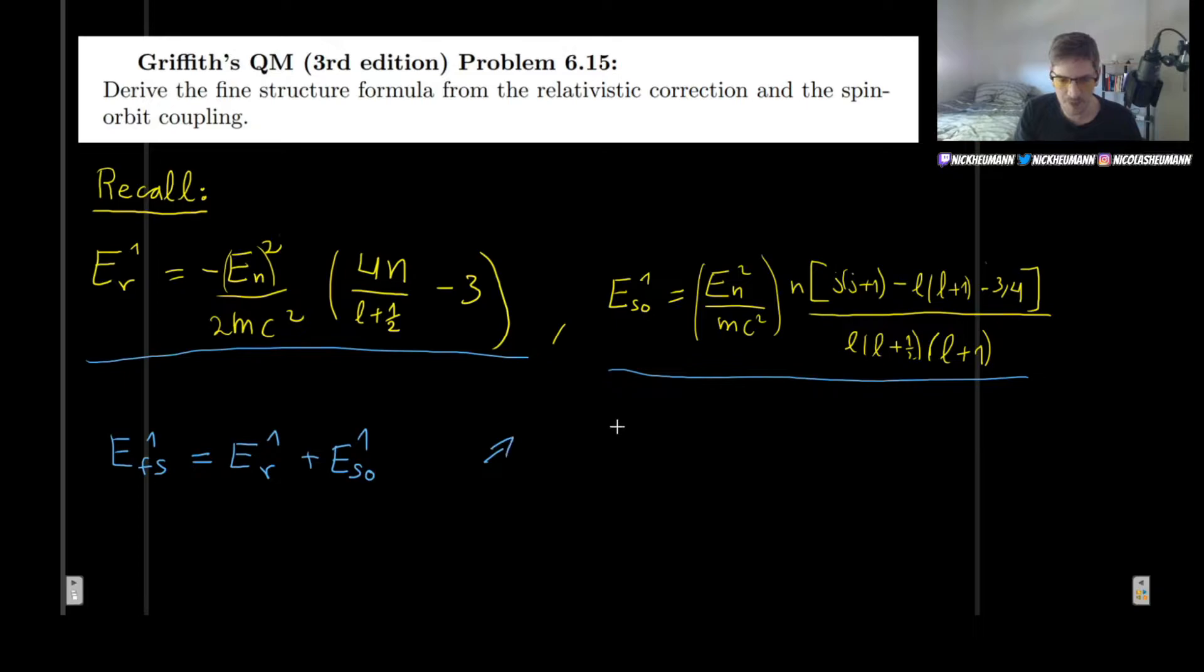So recall that J is L plus S, right—our angular momentum and the spin angular momentum, orbital and spin. And there are two possible values for S, so we can have J equal L plus one-half, since we're dealing with fermions, right, with the electron, and J can be L minus one-half. So you can choose either one, whatever.